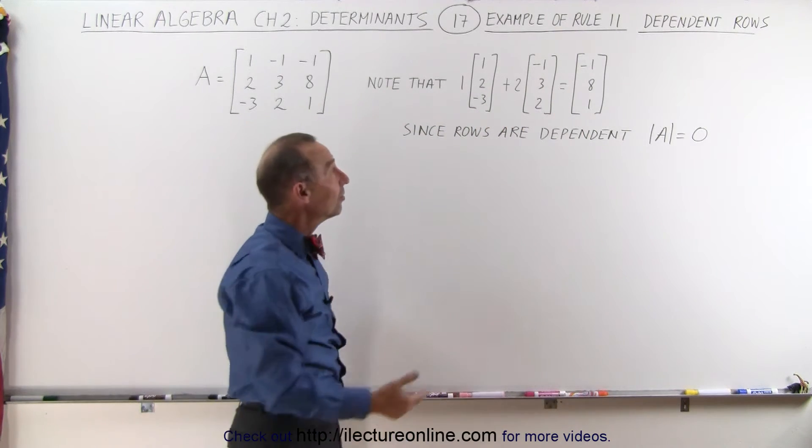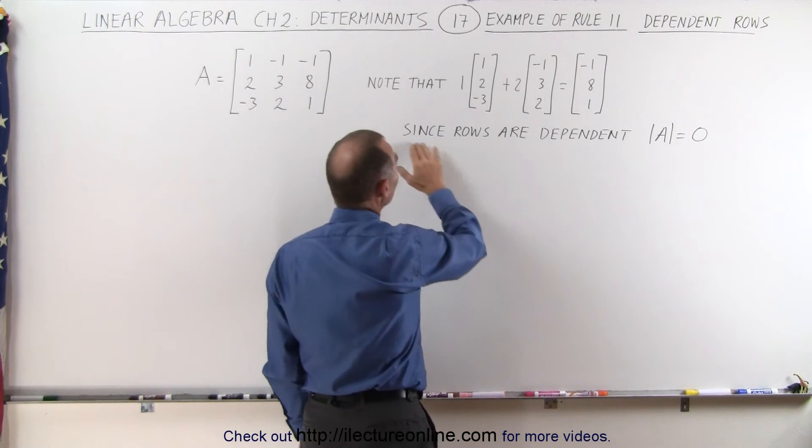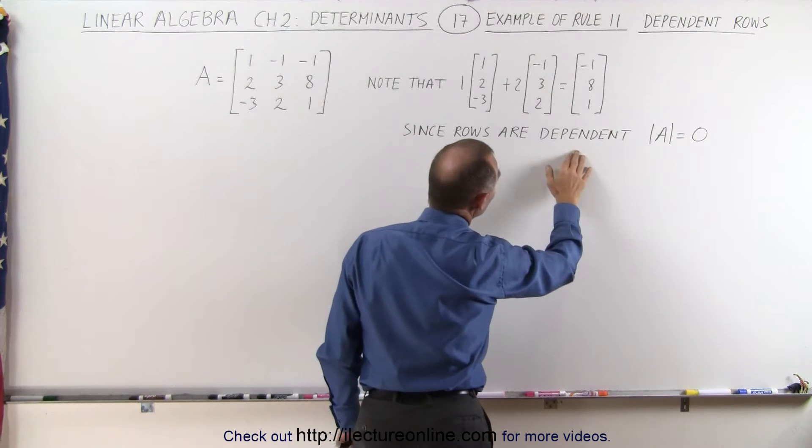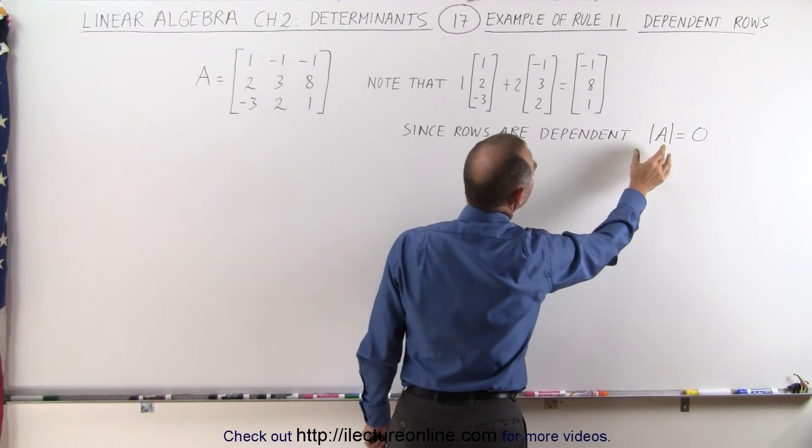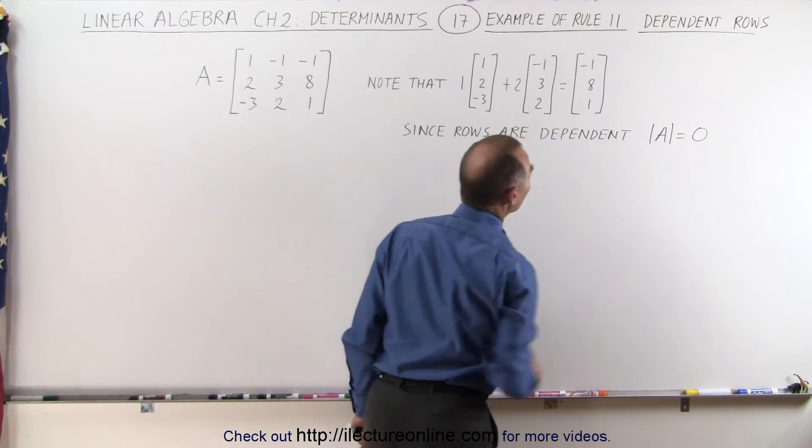And then the rule says, rule number 11, that if the rows are dependent then the determinant of the matrix equals 0.